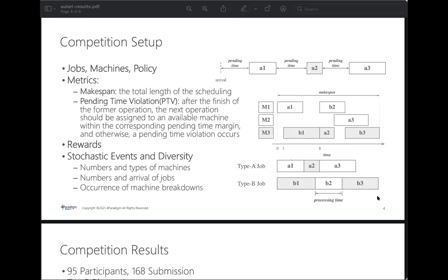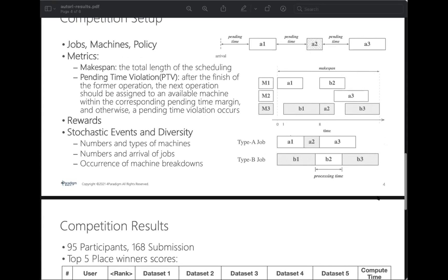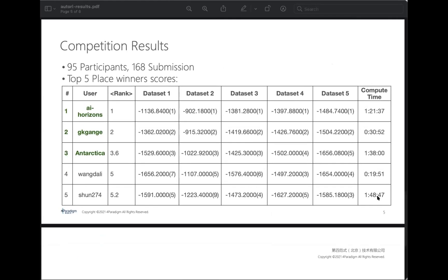Stochastic events and diversity are also considered, such as number and type of machines, number and arrival of jobs, and occurrence of machine breakdowns. The competition ran from April 21st to July 23rd, and there were in total 95 participants and 168 submissions.